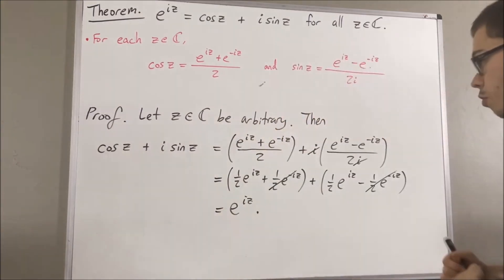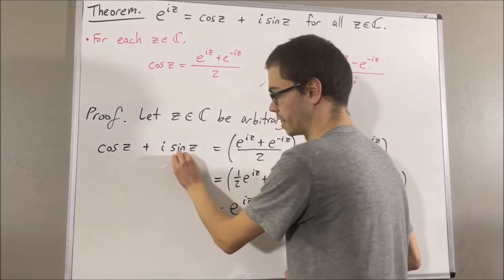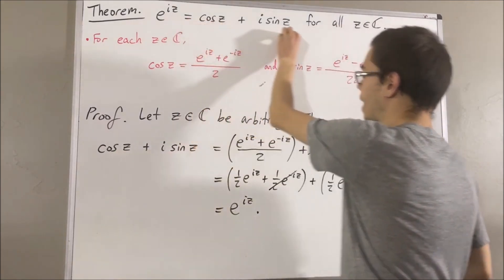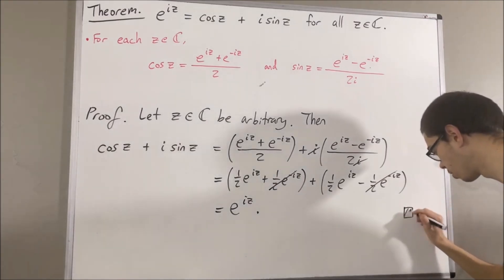And so, we have shown that e to the iz is equal to cosine of z plus i sine z. Which is exactly what we wanted to show. So this completes the proof.